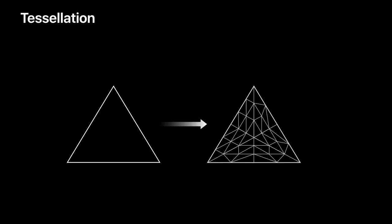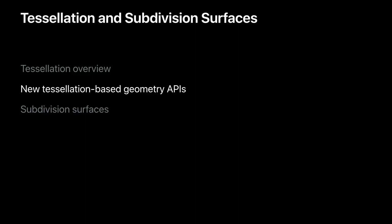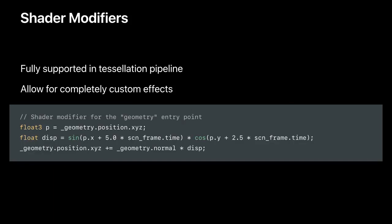Looking at the original triangle and tessellated version, you might be disappointed because all the new geometry lies in the original triangle — so for a highly detailed mesh, you want to do something with this extra geometry. That leads us to the new tessellation-based geometry APIs. First, shader modifiers are fully supported with the new tessellation pipeline — with a few lines of code you can create really custom effects. For instance, if your application has water and you want to simulate an ocean with waves, or any custom effect, shader modifiers are the right tool.